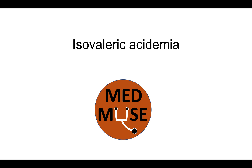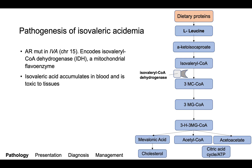Today we'll be talking about isovaleric acidemia. Isovaleric acidemia is an organic acidemia caused by an autosomal recessive mutation in the gene IVA on chromosome 15. This gene encodes isovaleryl-CoA dehydrogenase, which is a mitochondrial flavoenzyme, and that's the protein that's defective in this disorder.